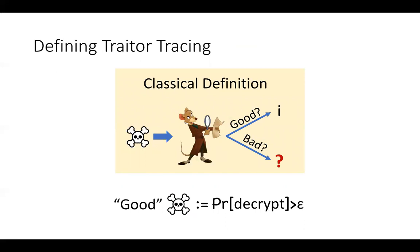The central challenge of defining traitor tracing in the quantum setting comes from the fact that the attacker can always output a dummy decoder that completely ignores the secret key and just always fails at decrypting. In that case, we certainly cannot hope to trace the decoder and identify the user. In the classical setting, this is resolved by defining a notion of 'goodness' for a decoder, where a decoder is good if it decrypts with some noticeable probability epsilon. The classical definition then requires that if the decoder is good, the tracer will be able to identify the traitor; if the decoder is bad, there are no guarantees.